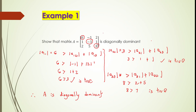Since A is diagonally dominant, you can solve it using the Gauss-Seidel iterative method. You can also solve it using Gauss elimination. But can you solve it using the Thomas algorithm? No — Thomas algorithm requires the matrix to be tridiagonal, meaning off-diagonal entries outside the three diagonals must be zero.